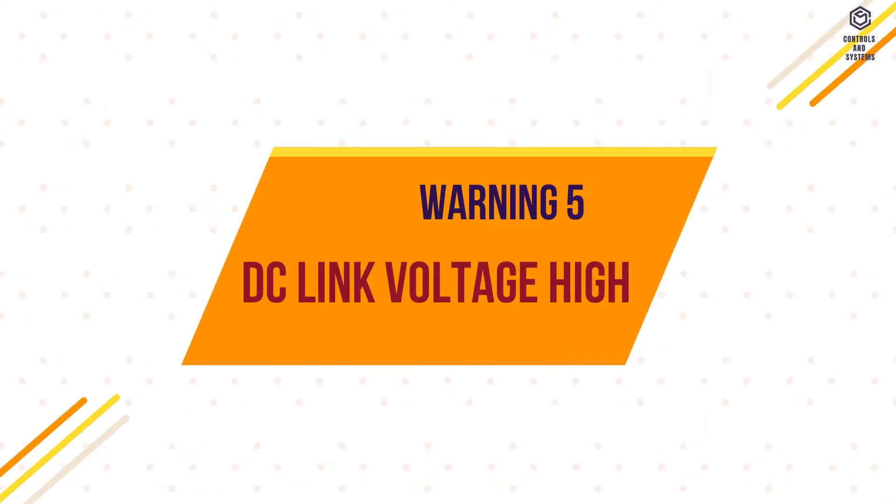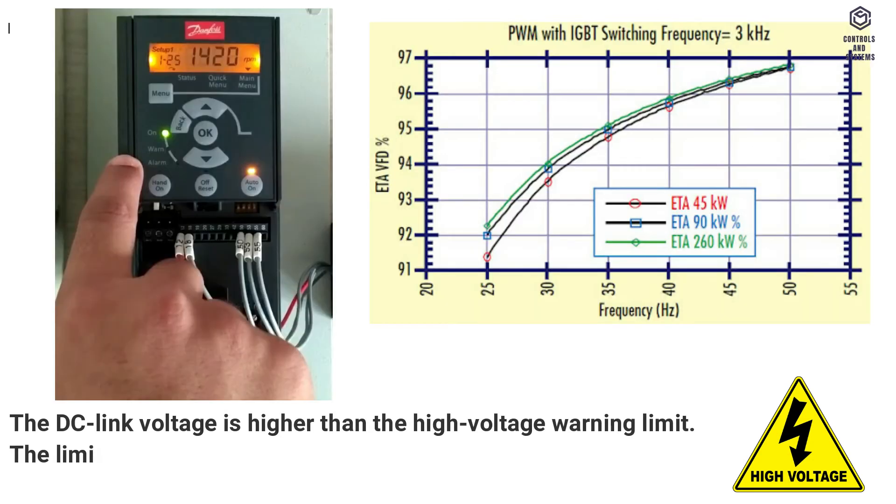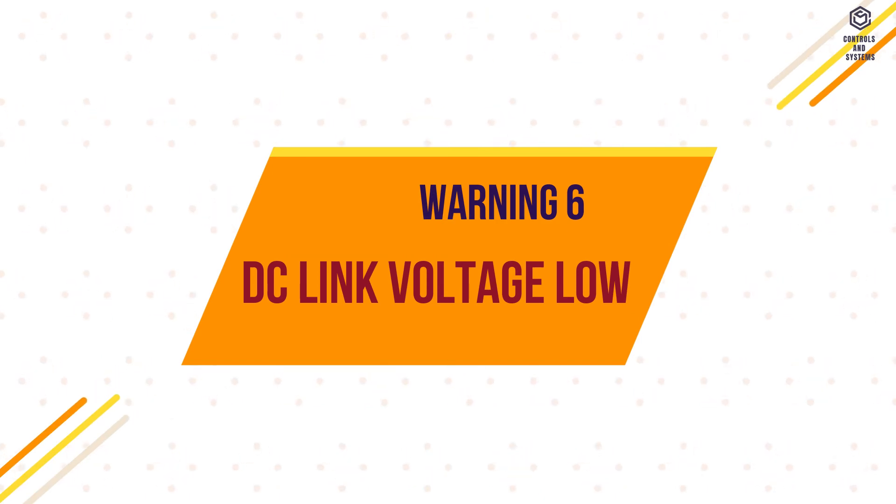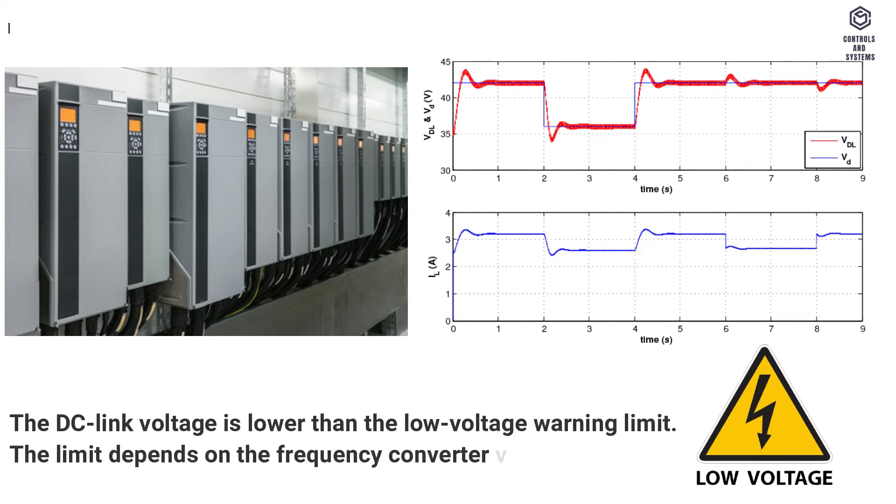Warning 5, DC Link Voltage High. The DC link voltage is higher than the high voltage warning limit. The limit depends on the frequency converter voltage rating. The unit is still active. Warning 6, DC Link Voltage Low. The DC link voltage is lower than the low voltage warning limit. The limit depends on the frequency converter voltage rating. The unit is still active.